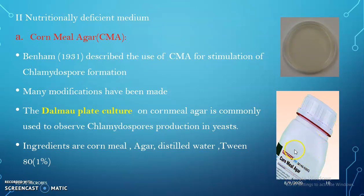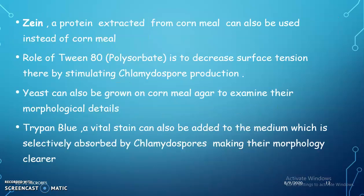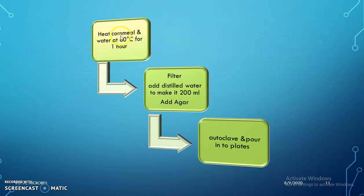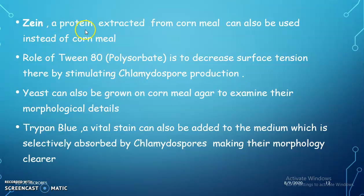This is the cornmeal agar plate and ready-made media from Hi-Media. Ingredients are cornmeal, agar, distilled water, and 1% Tween-80. To prepare, heat cornmeal and water at 60°C for 1 hour, then filter and add distilled water to make 200 ml, then add agar, autoclave, and pour into petri plates. Zein is a protein extracted from cornmeal and can be used instead of cornmeal. The role of Tween-80 (polysorbate) is to decrease surface tension, thereby stimulating chlamydospore formation.